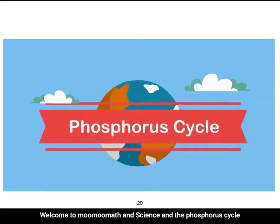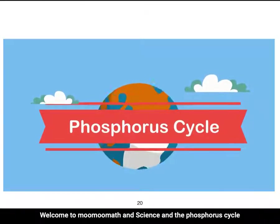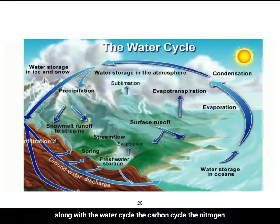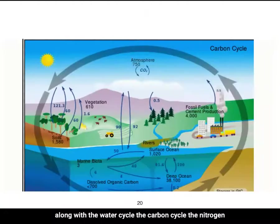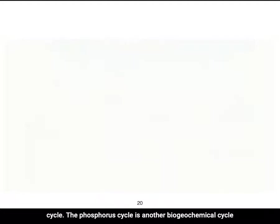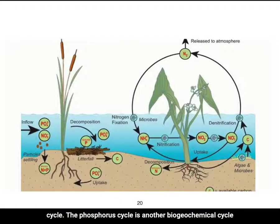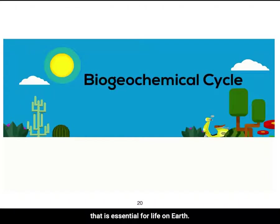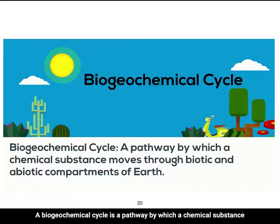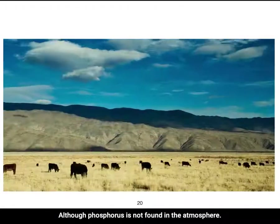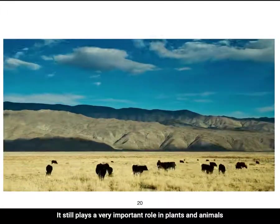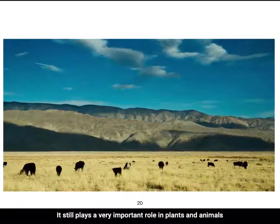The phosphorus cycle is another biogeochemical cycle — a pathway by which a chemical substance moves through biotic and abiotic compartments of Earth — that is essential for life on Earth. Although phosphorus is not found in the atmosphere, it still plays a very important role in plants and animals on Earth.